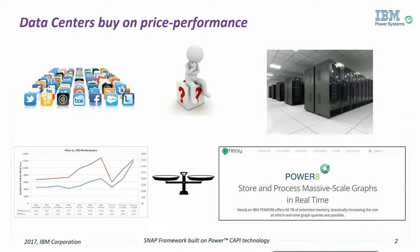A great example of this is Neo4j, the graph analytics company. They use our base CAPI Flash Accelerator to gain performance and achieve results they could not hit before. As they write on their website, the combination of Neo4j's native graph processing and Power8's in-memory vertical scalability is a natural convergence. Neo4j on Power8 makes it possible to store and process massive scale graphs in real-time, a problem that was simply unsolvable only yesterday.